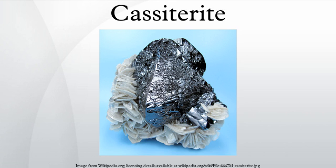Crystal twinning is common in cassiterite and most aggregate specimens show crystal twins. The typical twin is bent at a near 60-degree angle, forming an elbow twin. Botryoidal or eye-form cassiterite is called wood tin. Cassiterite is also used as a gemstone and collector specimens when quality crystals are found.